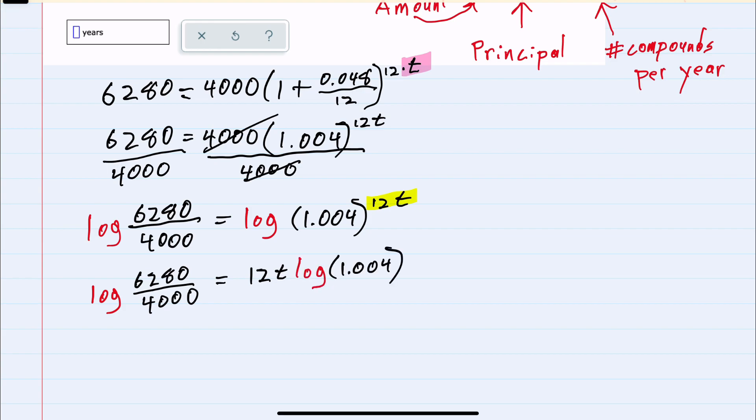So logs have allowed me to get our T out of the exponent, and we can continue to solve for T by dividing both the left and right-hand side by the 12 and the log of 1.004 on both sides...